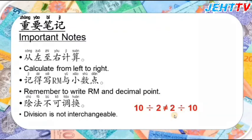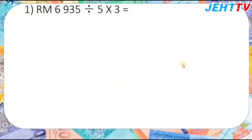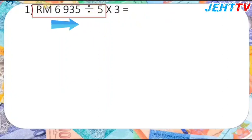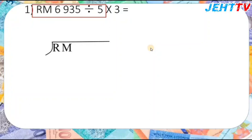Now we look at the first question. Question number one: RM6,935 divided by 5, multiplied by 3, equals to? Remember what I said — we need to calculate from left to right, so we need to do the division first: RM6,935 divided by 5.